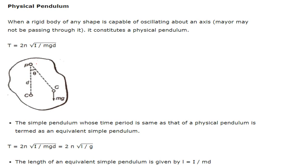Physical pendulum: when we have a rigid body of any shape capable of oscillating about any axis, it is called a physical pendulum. The time period is T = 2π√(I / mgd). A simple pendulum whose time period is the same as that of the physical pendulum is termed the equivalent simple pendulum, with T = 2π√(I/mgd) = 2π√(l/g), and the equivalent length is given by I = md.